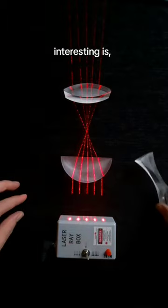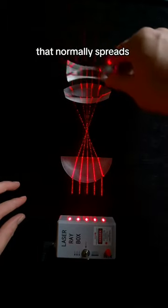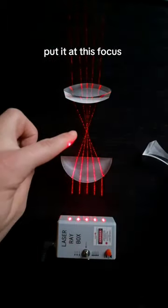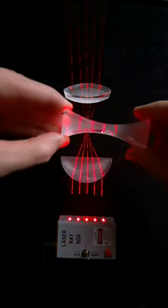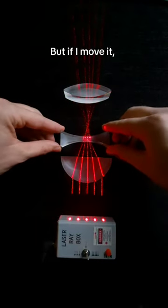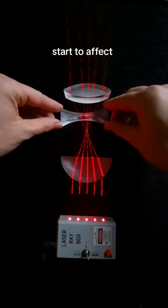One thing that's interesting is if I take this lens that normally spreads light out, but put it at this focus point between the two lenses, it doesn't really change much. But if I move it, then you see it start to affect the light again.